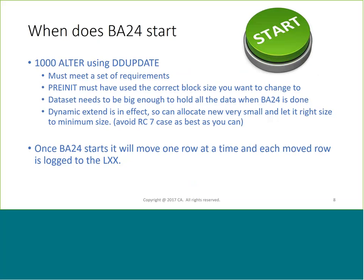For using DD Update, there are three requirements. You have to have a pre-init - it must be done and must be big enough to hold all the data when BA24 is done. If you have dynamic extend, that will help, but if you hit Return Code 7 you must repair it. You want to avoid Return Code 7 - make sure your right-size is big enough to hold the data; better to have too much than not enough. When BA24 starts, we log each row as it's moved. If you've got a million rows, we're going to log a million entries to the log, so be aware of where you are logging all this work.